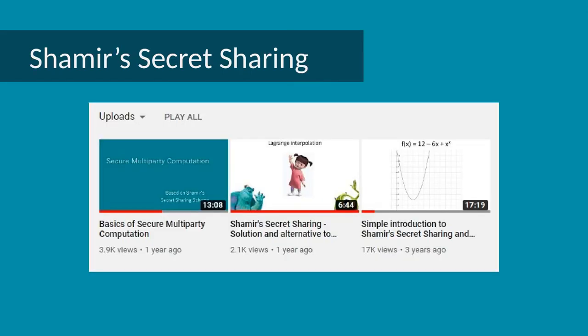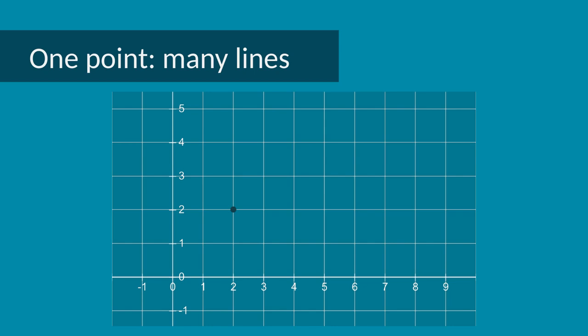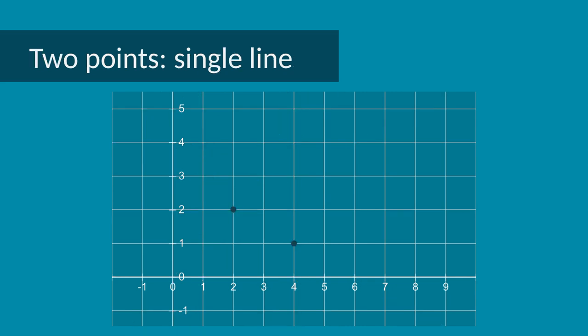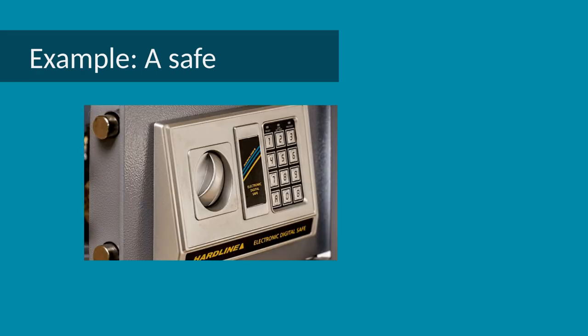In previous videos I talked about Shamir secret sharing scheme and secure multiparty computation. For understanding finite fields, we just need to recap this simple observation: if I give you one point in the graph, there's an infinite number of straight lines passing through it, each with different y-axis intercept. However, if I give you two points, there's exactly one straight line passing through both points, and it also passes through one single point on the y-axis.